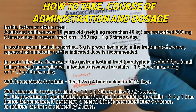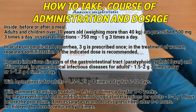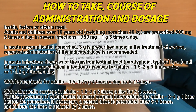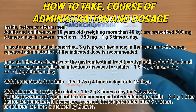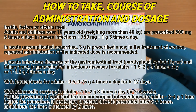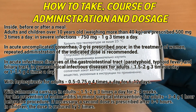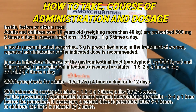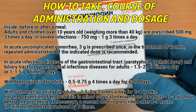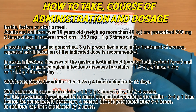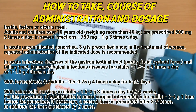In the treatment of women, repeated administration of the indicated dose is recommended. In acute infectious diseases of the gastrointestinal tract, paratyphoid, typhoid fever, and biliary tract. In gynecological infectious diseases, for adults 1.5 to 2 g 3 times a day or 1 to 1.5 g 4 times a day. With leptospirosis, for adults 1.5 to 0.75 g 4 times a day for 6 to 12 days. With salmonella carriage, in adults 1.5 to 2 g 3 times a day for 2 to 4 weeks. For the prevention of endocarditis in minor surgical interventions, for adults 3 to 4 g 1 hour before the procedure.